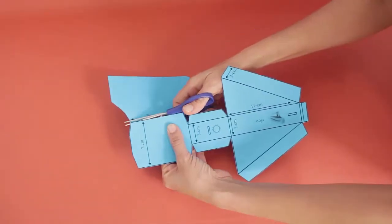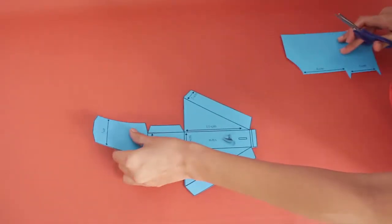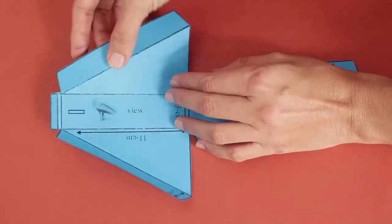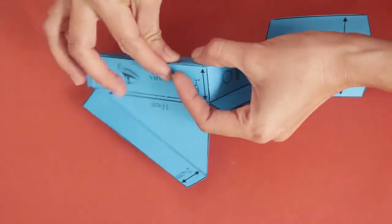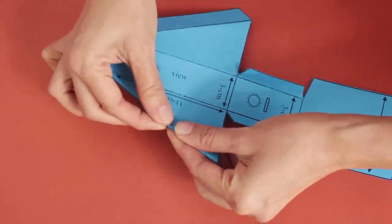Once you finish cutting you will get an arrow shape. Now fold along all the dotted lines. This will help in assembling the model.